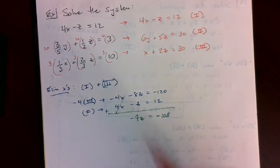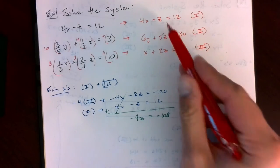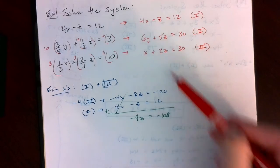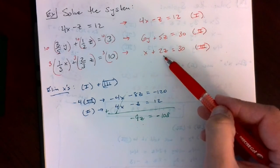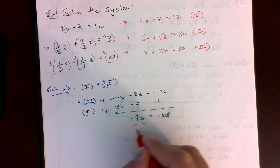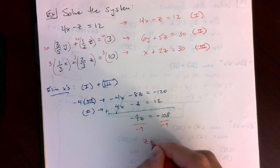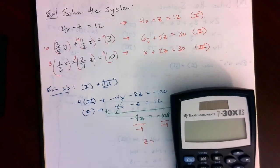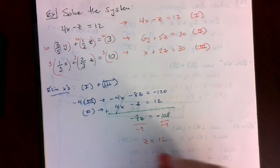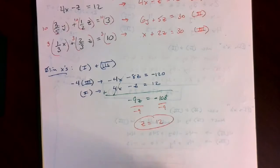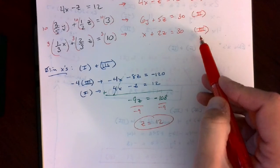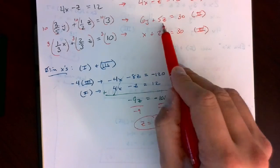The reason I did this is to have just one variable left. I have negative 9z equals negative 108. To solve, I divide by negative 9 each side. So z equals negative 108 divided by negative 9, which comes out to positive 12. You found z right away. Now once you find z, you can back substitute into equation 1 or 3 to find x and equation 2 to find y.